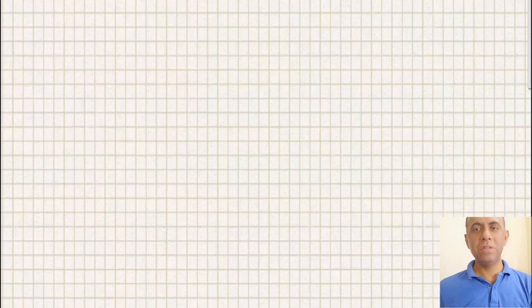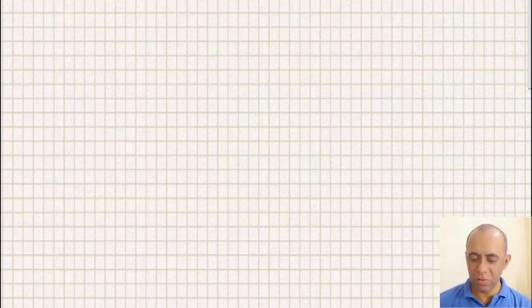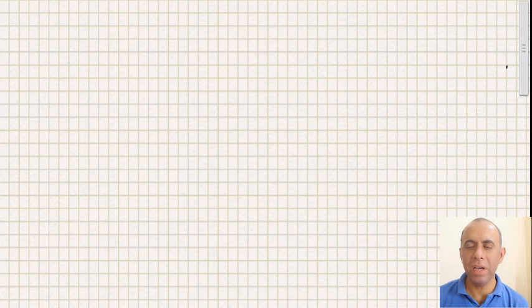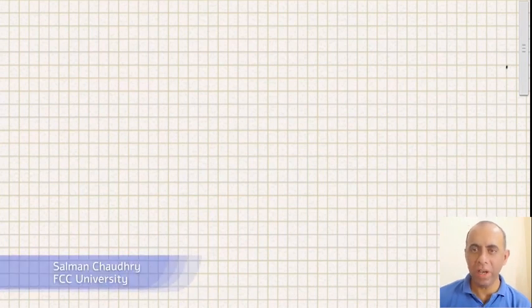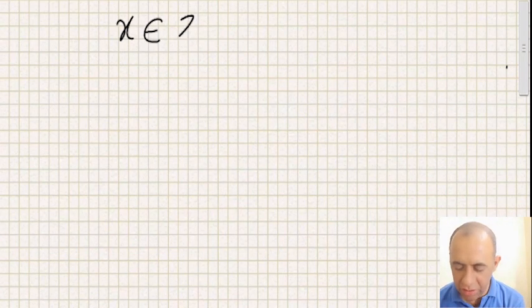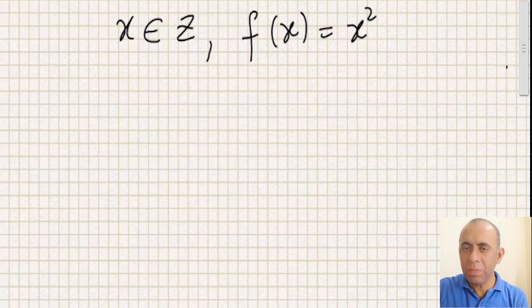Hello everyone, I am going to describe functions on sets in this video. There is a difference between an algebraic function and a function of sets. Let me first give you an example of what an algebraic function means. We define an algebraic function f of x with domain x, where x can be an integer, and f of x is defined as x squared.